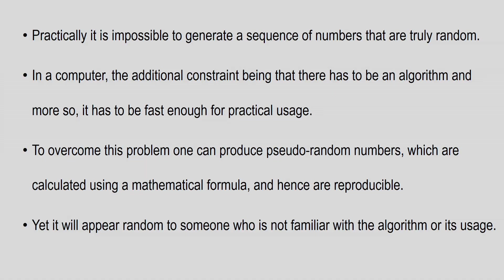To overcome this problem, one can actually produce pseudo-random numbers, which are calculated using a mathematical formula. Since they emerge from a mathematical formula, they are bound to be reproducible. But of course, they will appear random to someone who is either not familiar with the algorithm or unaware that it has been used — for them, it will appear as a completely random variable.